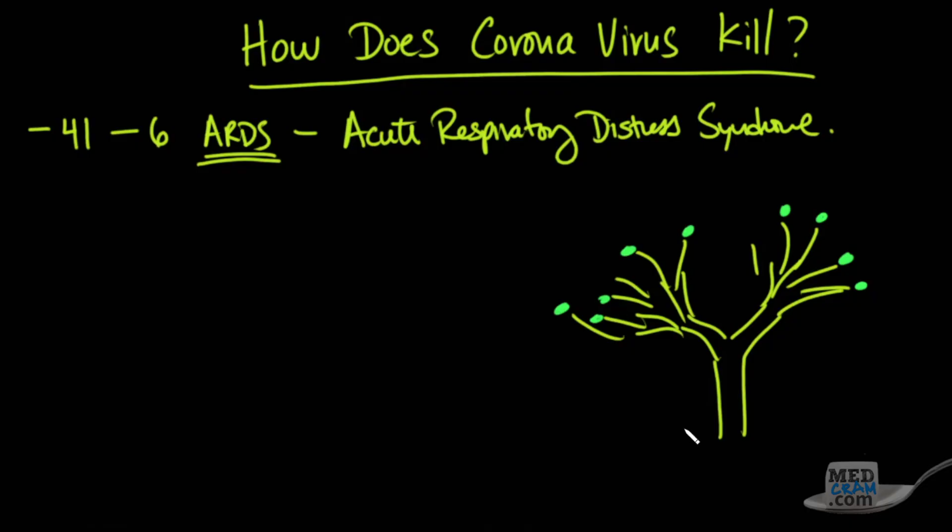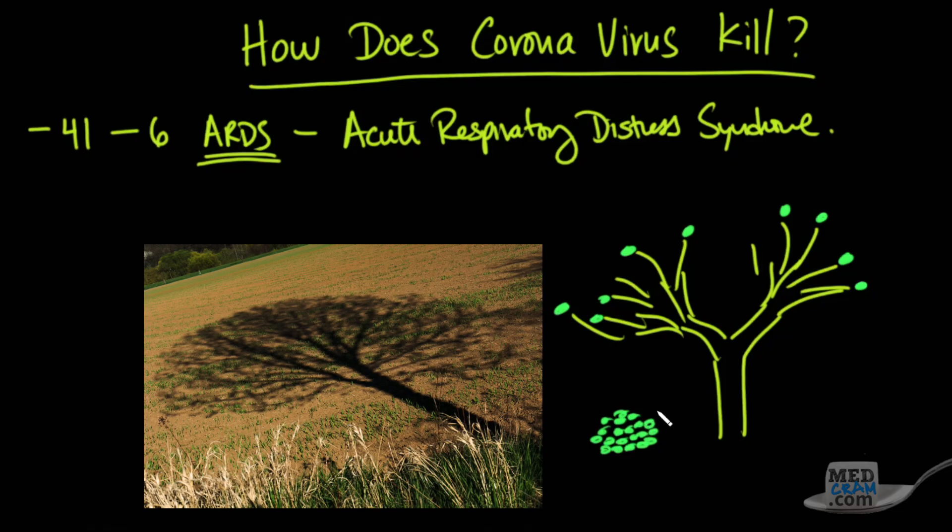And so what happens is that this tree and the branches increase the surface area of the leaves on the tree, so that if you were to pluck off all of the leaves, and you were to put them on the ground next to each other, the surface area that is represented by those leaves would be larger than the shadow that is produced by the sun on that tree.